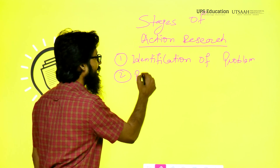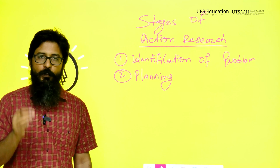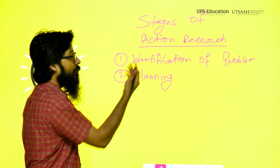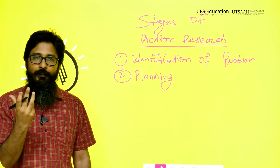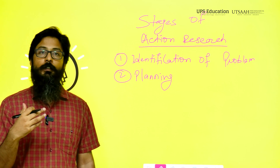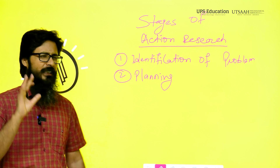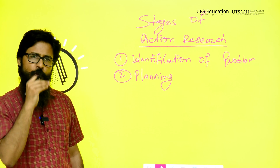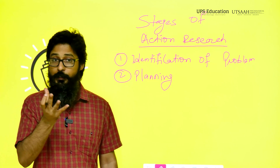The second stage will be planning. Planning simply means coming up with a plan to address that particular problem. This could involve trying out new teaching methods. Suppose the teacher identified at the identification stage that students are not engaging themselves in the classroom — so they will make a plan to use a new teaching method, like using more activities or encouraging student engagement through various classroom activities.